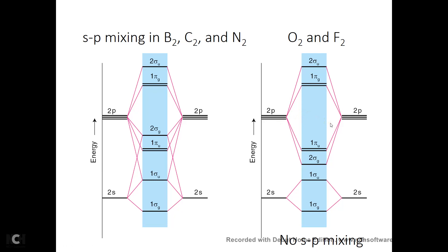Now look at O₂ and F₂. One oxygen has six valence electrons — two in the 2s orbital and four in the 2p orbital. First, let's look at the 2s orbitals: two electrons here and two electrons here. After they form sigma-G and sigma-U, you have two electrons in each — the bond order from 2s is zero. This doesn't count; no bond is formed between the 2s electrons because the number of bonding electrons cancels the number of anti-bonding electrons.